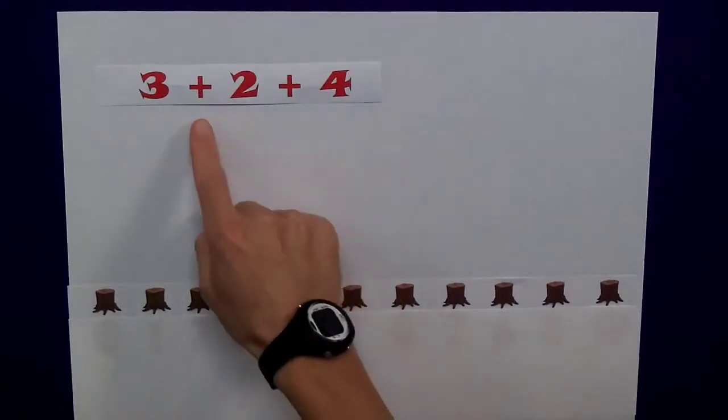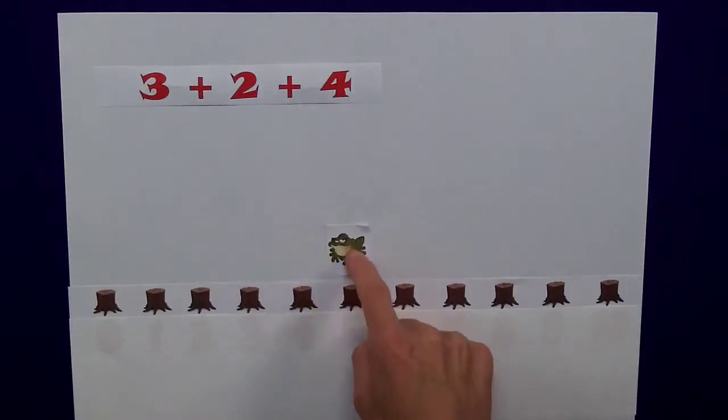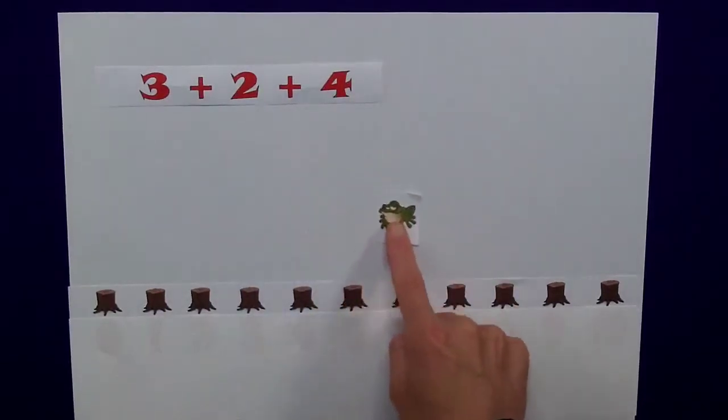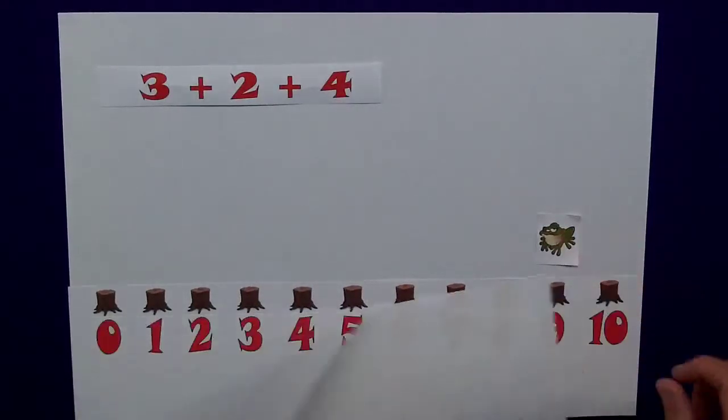So, remembering that addition, he's jumping up the number line, let's do 2 first, 1, 2, followed by the 4. 1, 2, 3, 4, and he ends up at 9.